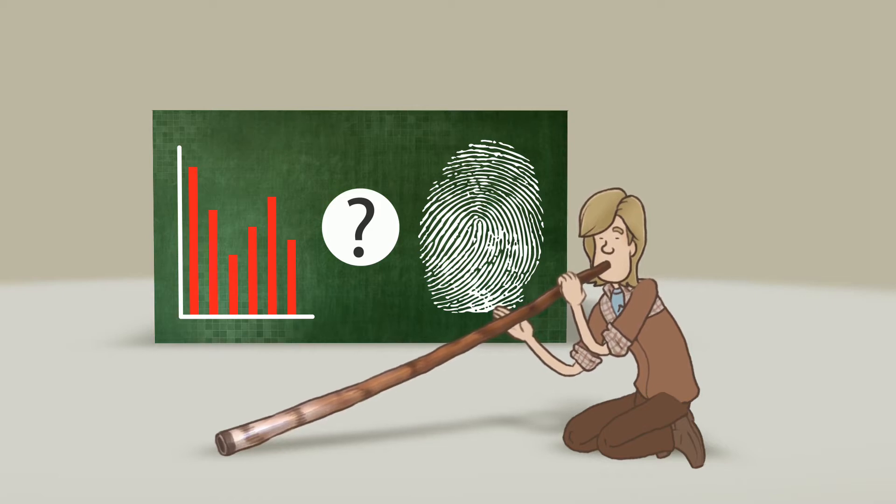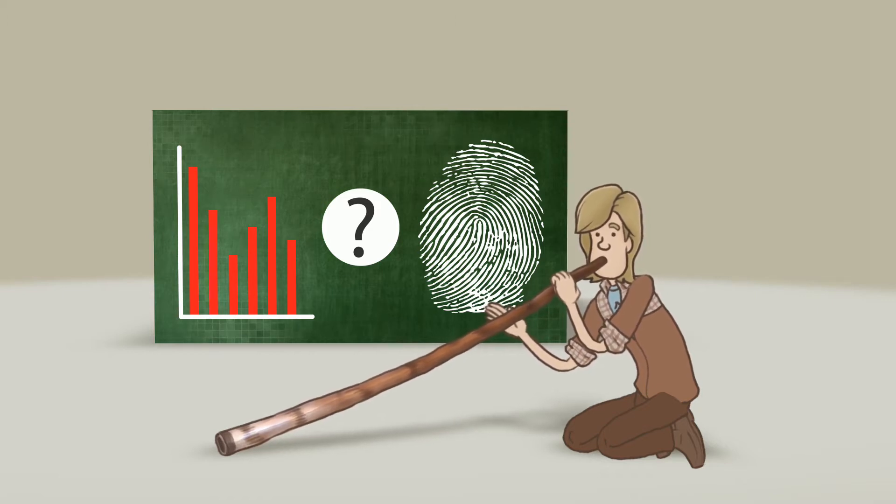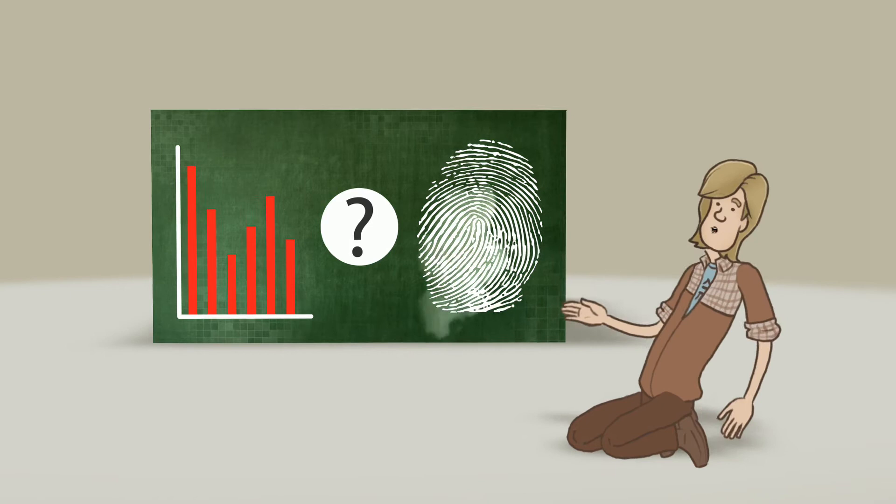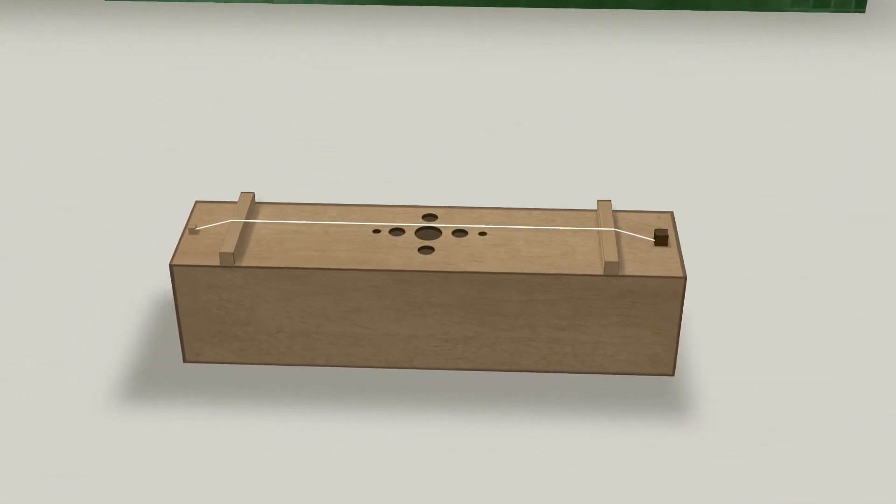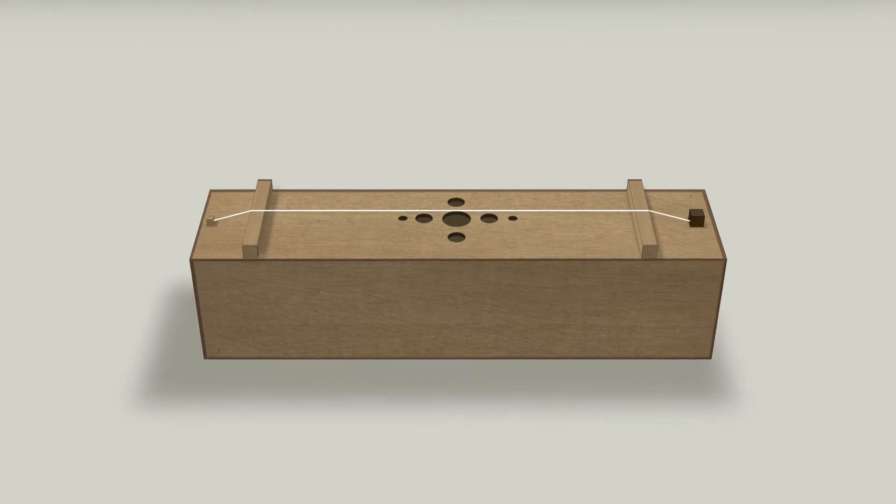Let us answer the question whether the spectrum is a unique fingerprint of the musical instrument used. It is best explained using a single vibrating string, the so-called monochord.